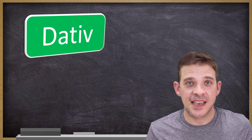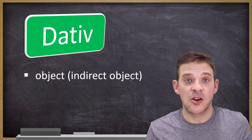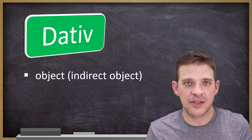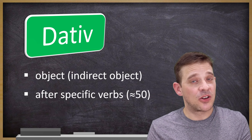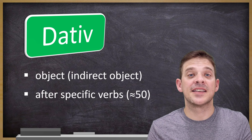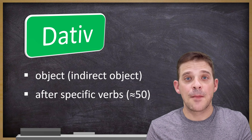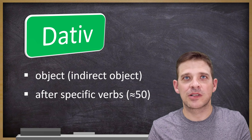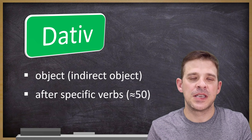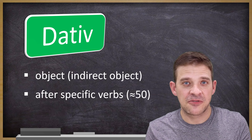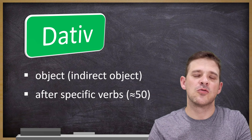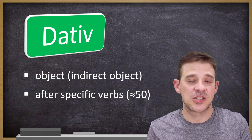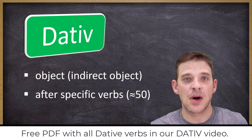Next is the dative case. Again, it's an object — referred to as the indirect object. Dative is used after specific verbs. There are only about 50 common dative verbs you need for daily use, from A2 to B2 level. This is really not that much, and I recommend you learn those dative verbs.